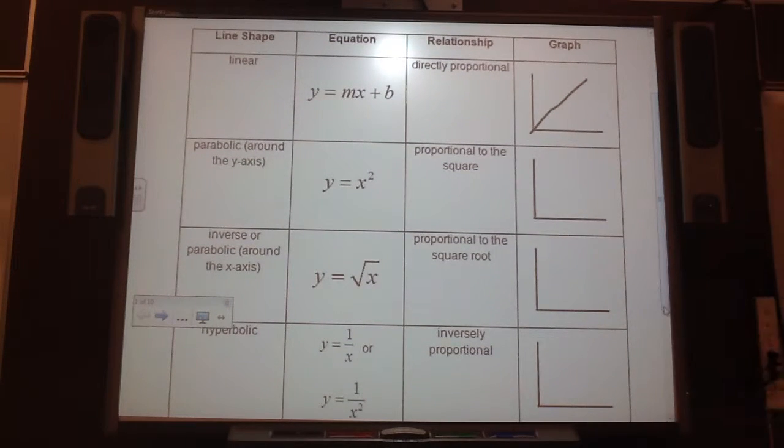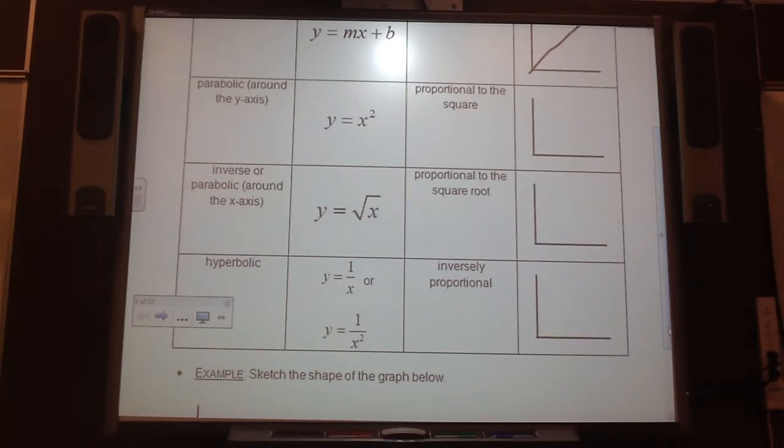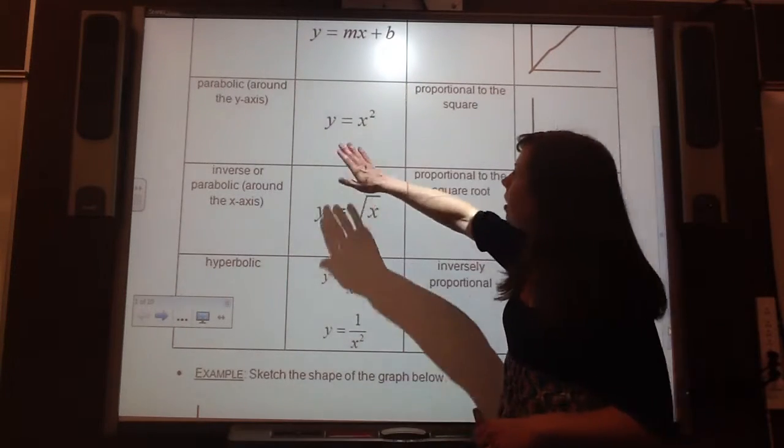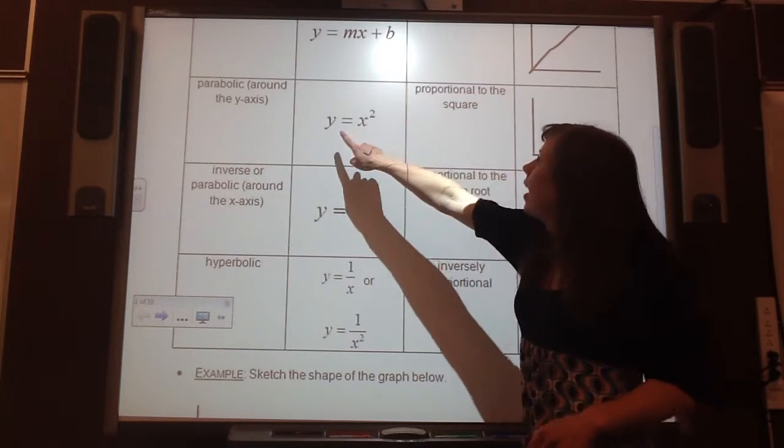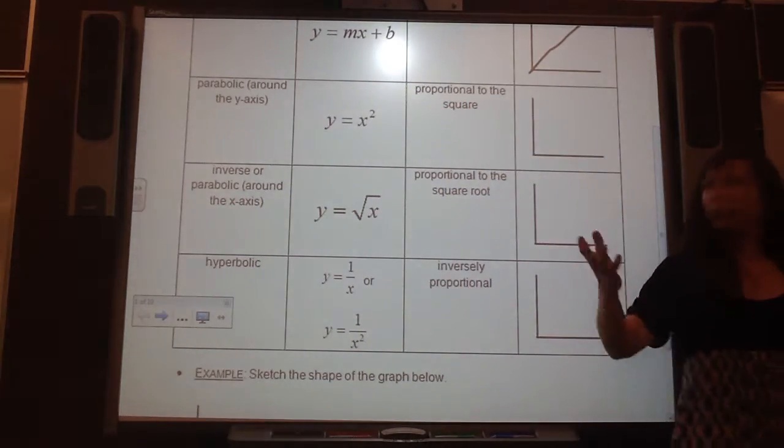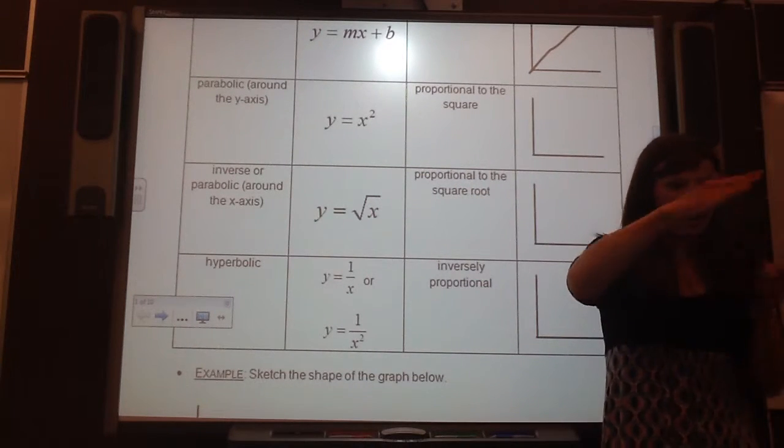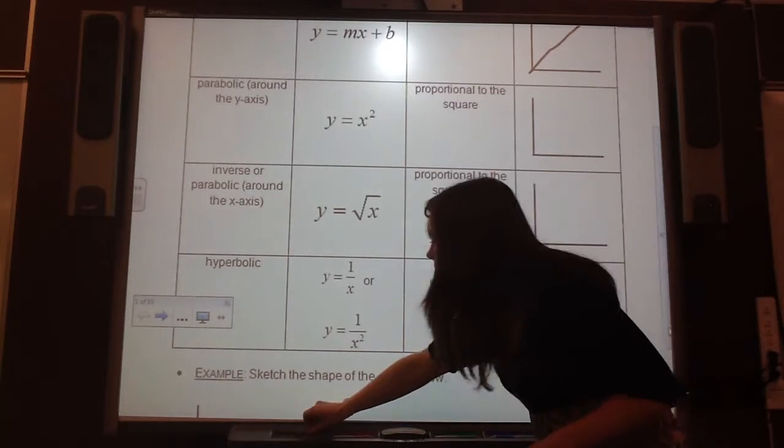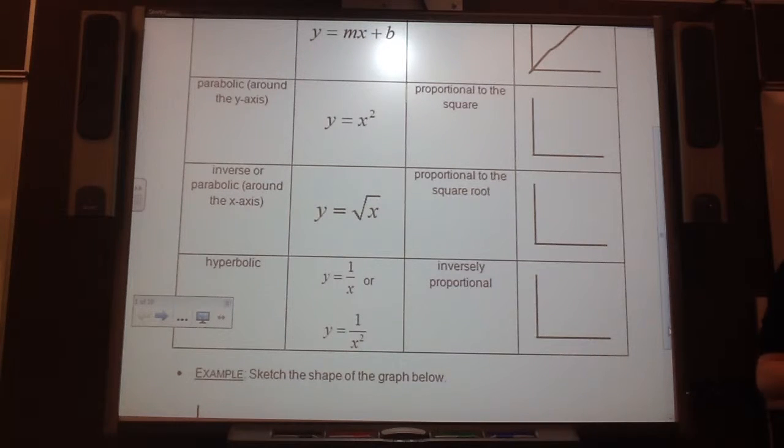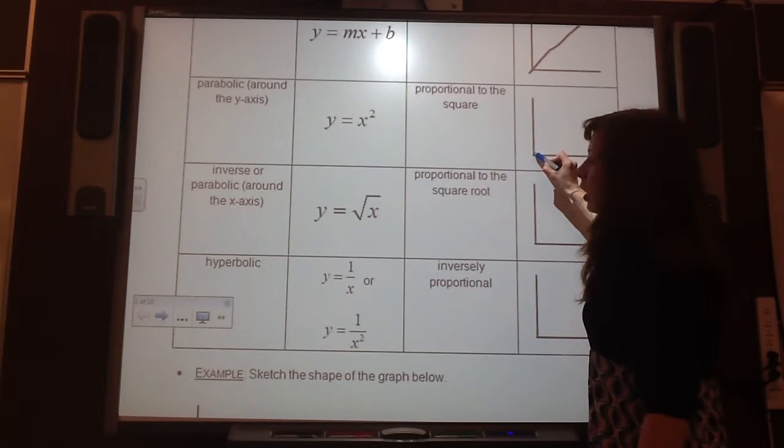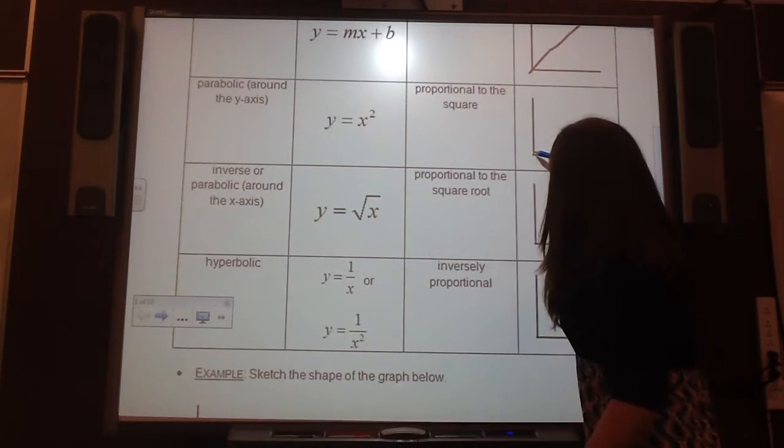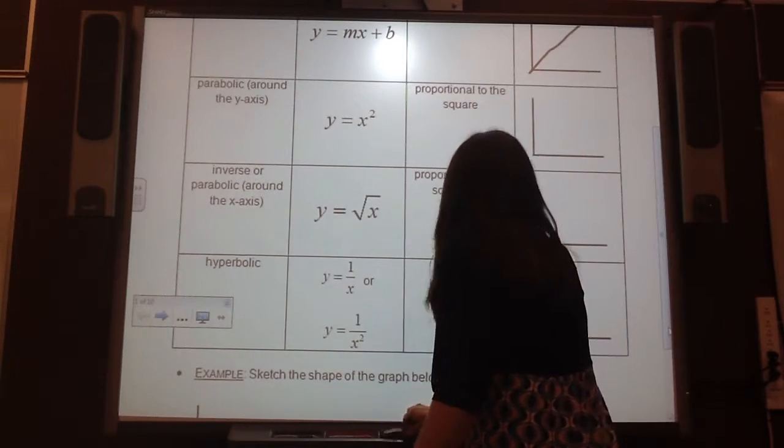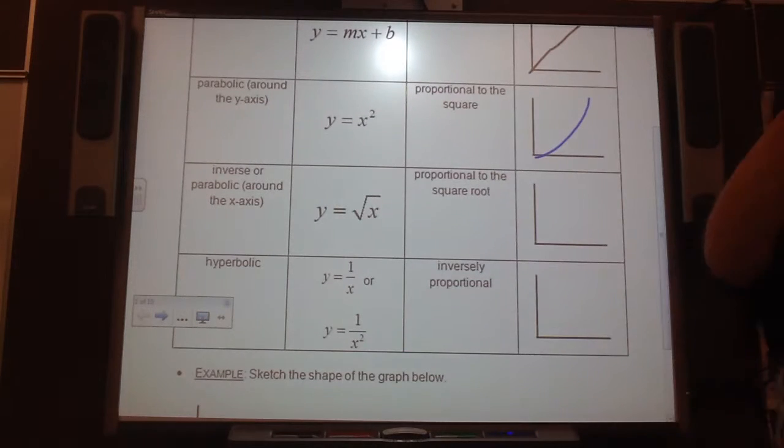So let's think about some of the other types of mathematical equations and what their shapes would look like. Say we have this equation, y equals x squared. This is a parabolic shape where the y is proportional to x squared. That's just, it's y, if y increases by a certain increment, x will increase by its square. So what will it look like? Use your finger and show me. Is it like an acceleration? Yes. So like, whoop. What if we had y is equal to the square root of x? This is an inverse or parabolic around the x-axis. And when we talk about it, we can say y is proportional to the square root of x. What if we had y is equal to 1 over x or y is equal to 1 over x squared? This will give us a hyperbolic shape, which is inversely proportional.